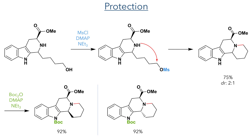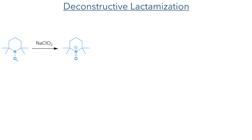At this point, the two isomers could be separated and both were reacted separately with Boc anhydride to protect the indole nitrogen. With this in hand, they could then carry out the deconstructive lactamisation. In this reaction, TEMPO is first oxidised by sodium chlorite to form an oxoammonium species.